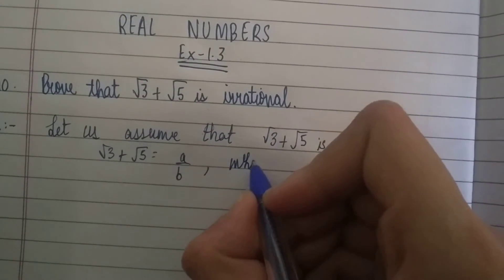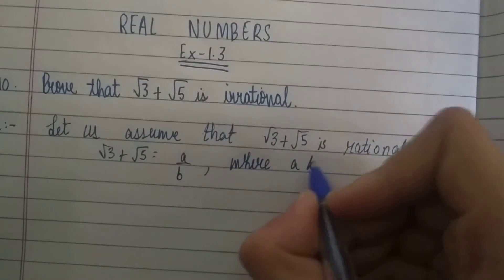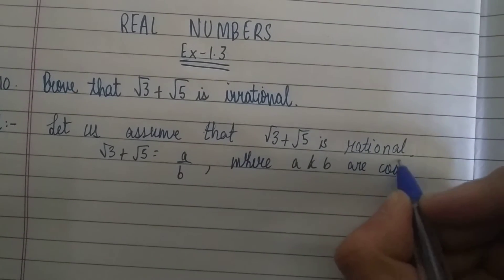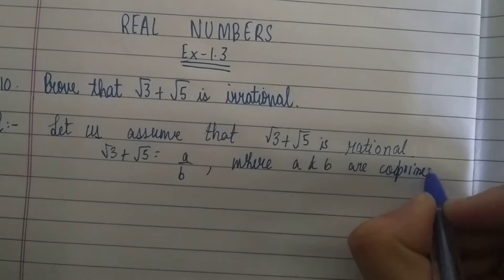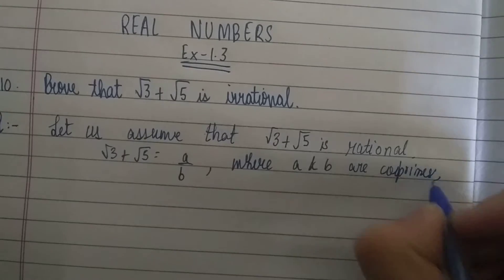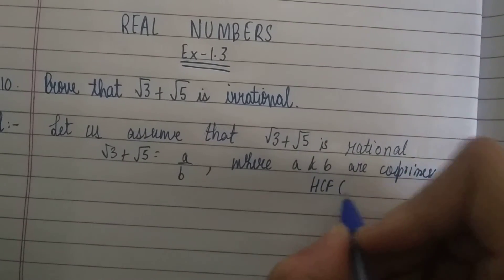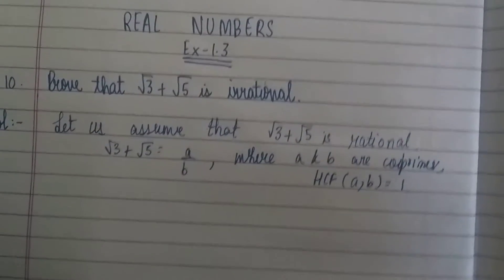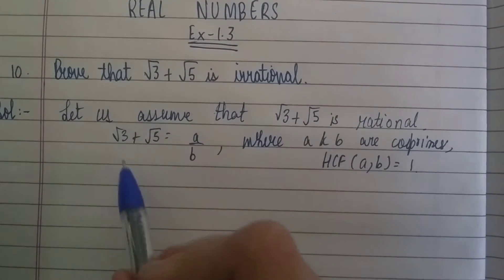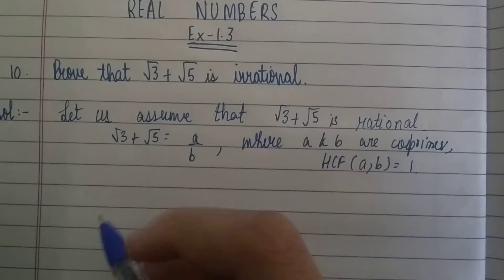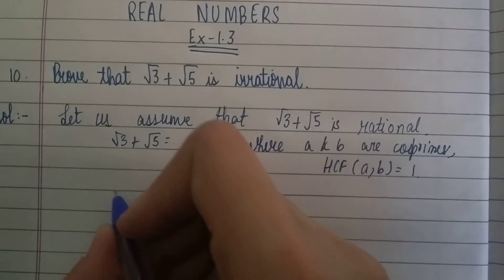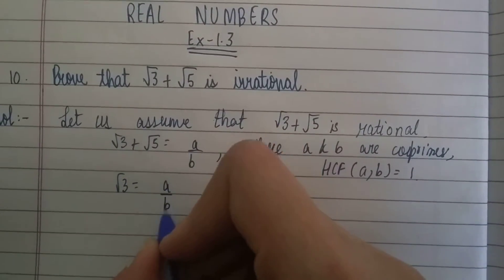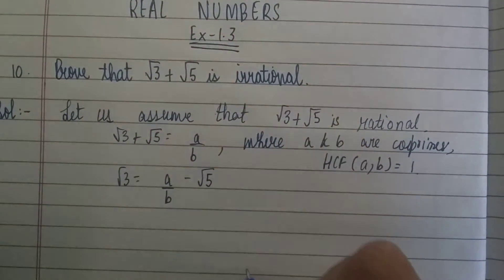If it is rational, then √3 + √5 = a/b, where a and b are co-primes, meaning HCF(a, b) = 1. Now we will rearrange — we will send √3 to the other side, so √5 = a/b − √3.